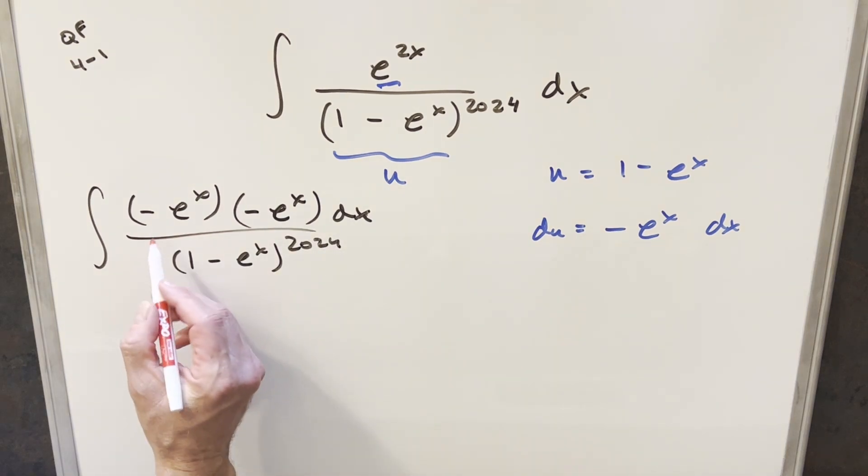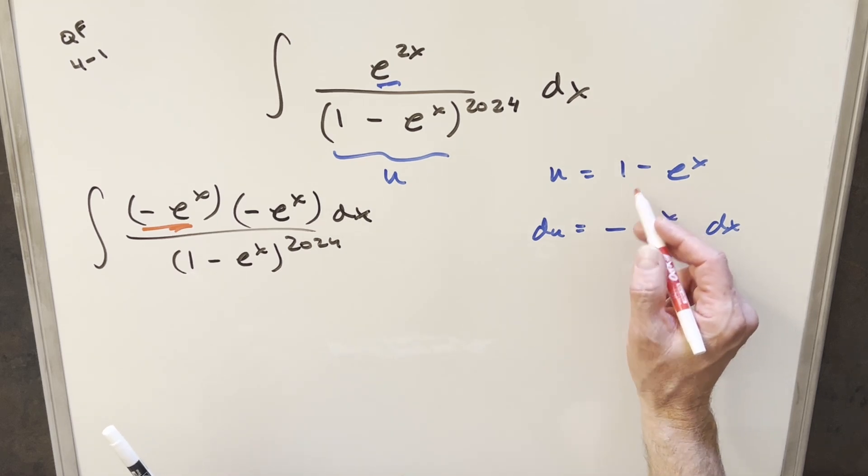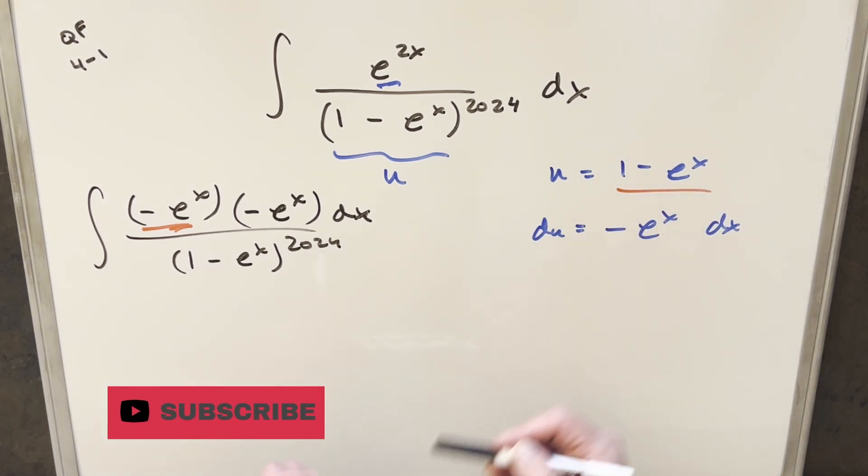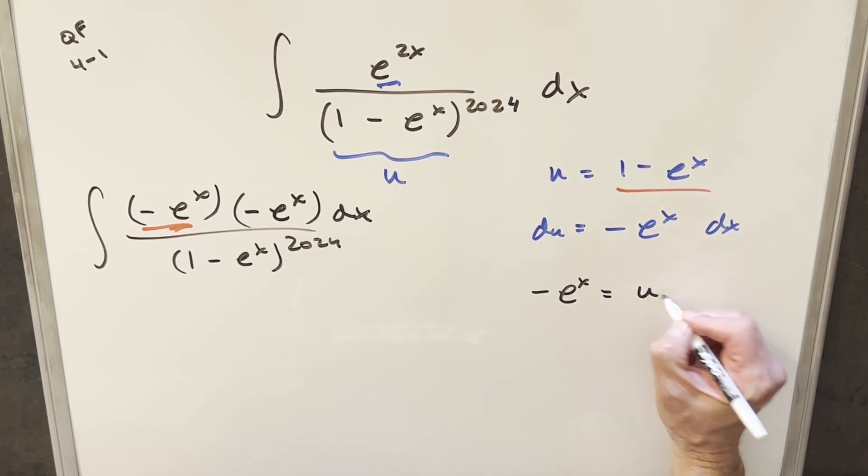And then one other thing before we substitute, let's just get a value for minus e to the x. So what I can do is, here we've got this u equals 1 minus e to the x. If I just subtract 1 on both sides, we can solve for minus e to the x, and we can write that as just u minus 1.